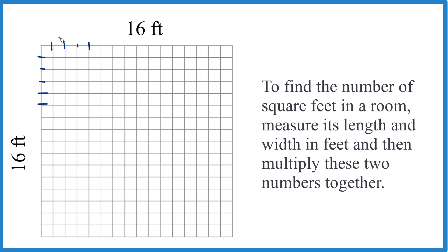So really each one of these is one by one or one square foot. So if you counted up all these squares you'd figure out how many square feet you have for a 16 foot by 16 foot area. Turns out that that's 256.